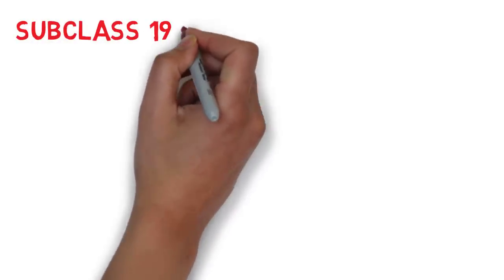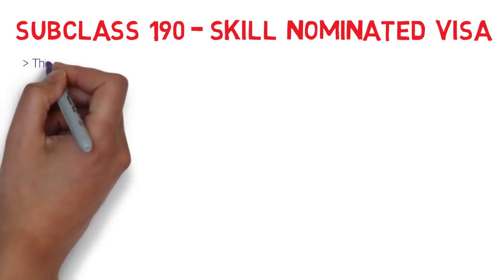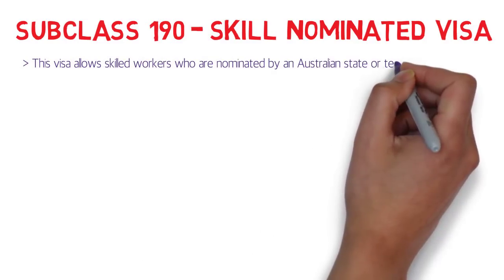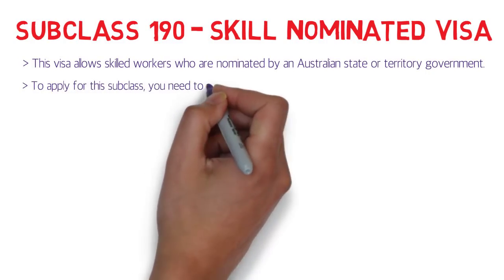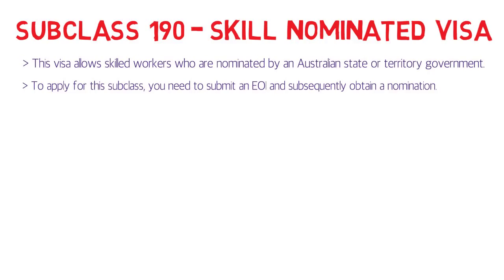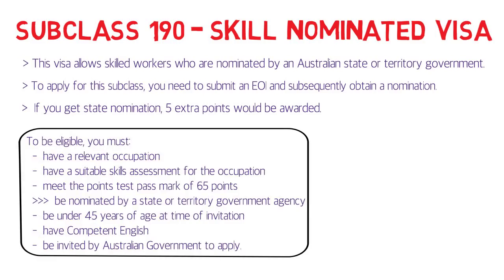Now let's talk about subclass 190, also called the Skilled Nominated Visa. This visa allows skilled workers who are nominated by an Australian state or territory government to apply. You need to submit an Expression of Interest and subsequently obtain a nomination. If you get the state nomination, five extra points are awarded, which is a big bonus and will definitely help you get an early invite.